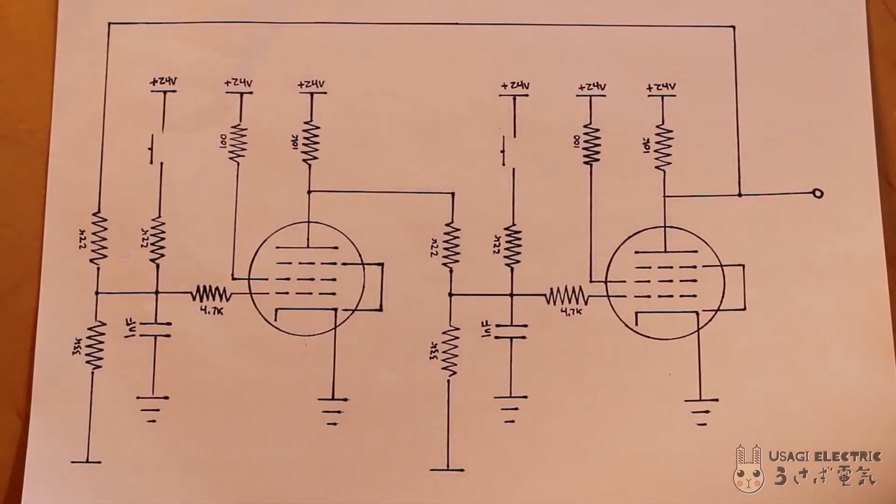In this schematic, two 6AU6 tubes are set up as a bistable multivibrator with additional set and reset inputs.